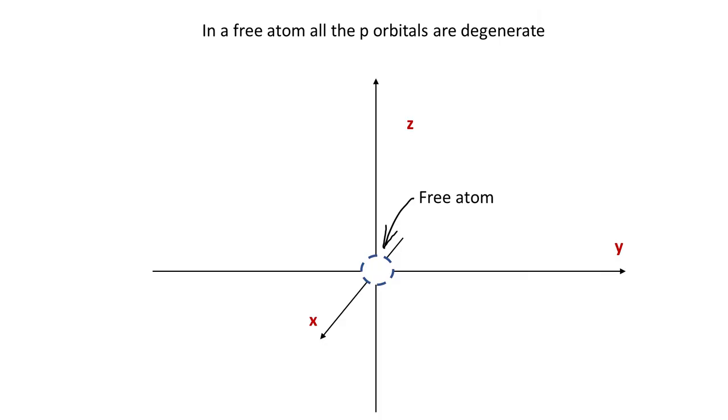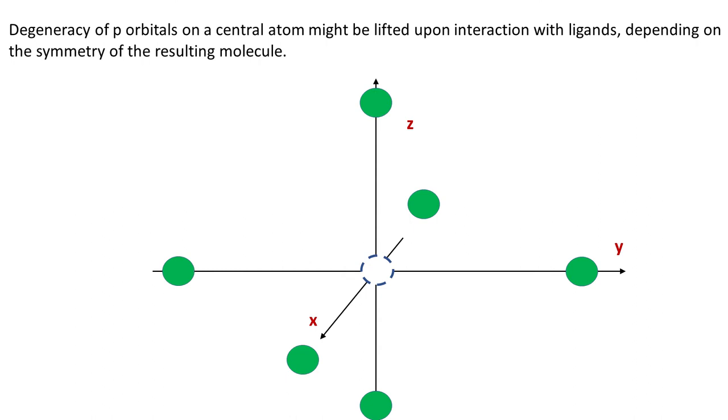One way to think about it is that in a free atom all p orbitals have the same energy. And of course the same goes for a set of d orbitals and so on. The moment the central atom starts to interact with ligands, the degeneracy might be lifted, depending on the symmetry of the resulting molecule.